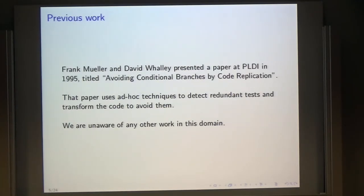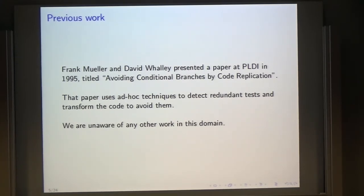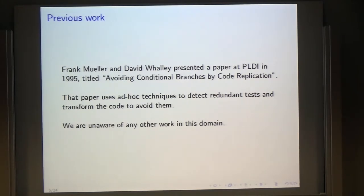The previous work: there is a paper from 1995 presented at PLDI that says avoiding conditional branches by code duplication. It's a very interesting paper. It does avoid redundant tests, it works on the C language, and all the examples are transformations of source code of C to other source code of C. They appear to be using a completely ad hoc way of detecting when these redundant tests exist. I've done a forward-in-time search of people referring to this paper, and have not found any kind of work done in this domain since. If I missed something, please let me know.